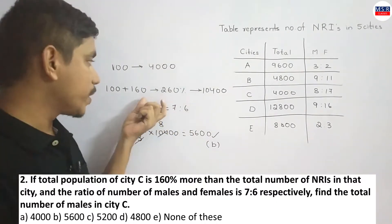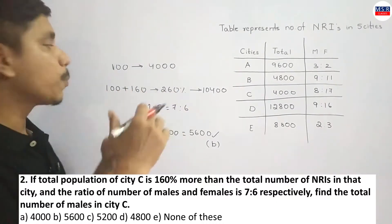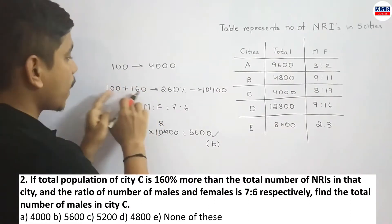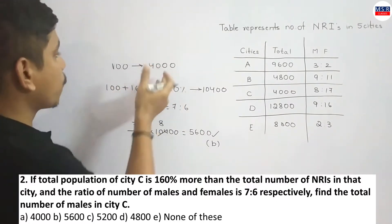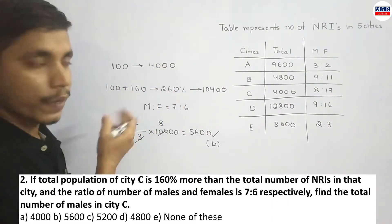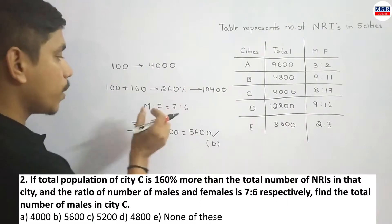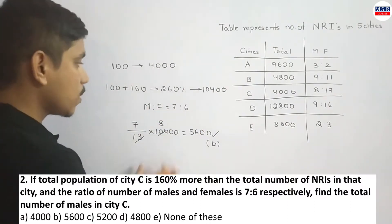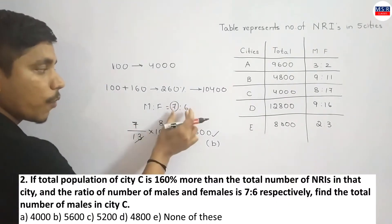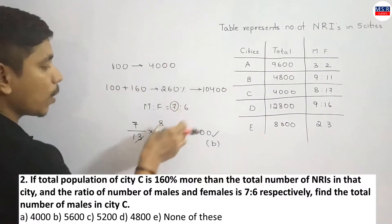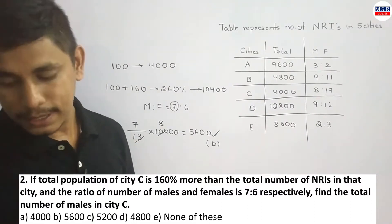To recap: total population is 160% more, meaning 100 plus 160 = 260%. 100 parts = 4000, so 1 part = 40, and 26 times 4 = 104, giving 10,400 total population. Male-to-female ratio is 7 is to 6; males are 7 parts out of 13 parts, multiplied by total population 10,400, giving the answer 5,600.